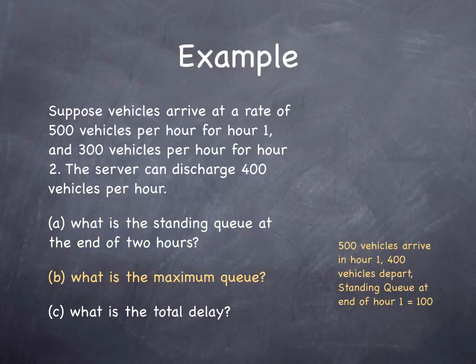What is the maximum queue? 500 vehicles arrive in hour one, 400 vehicles depart. The standing queue at the end of hour one is 100 vehicles.